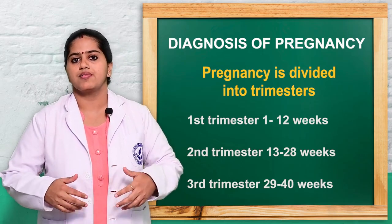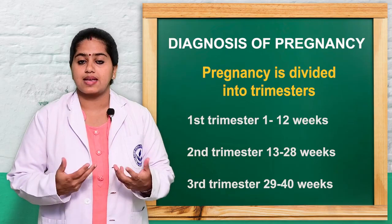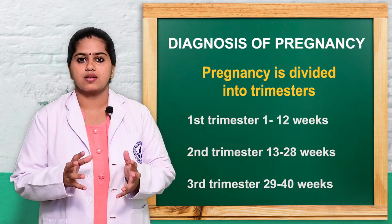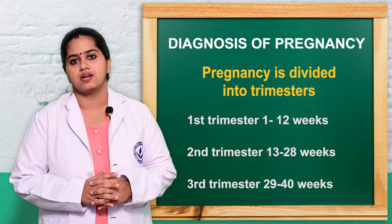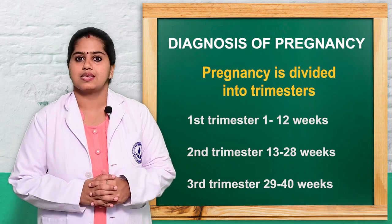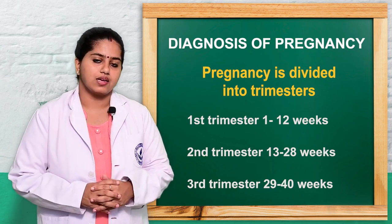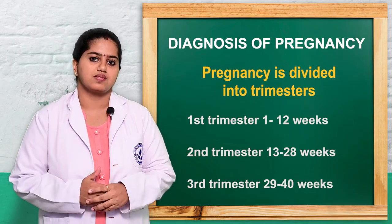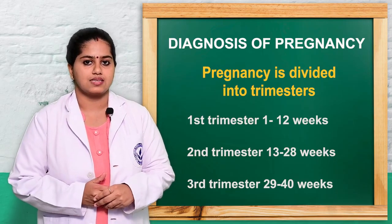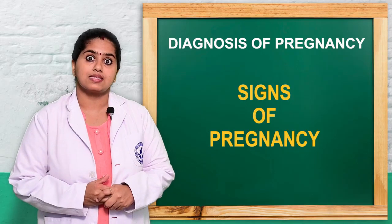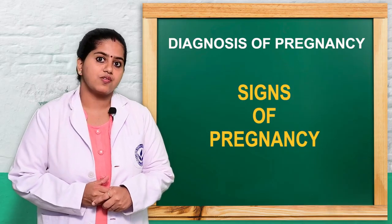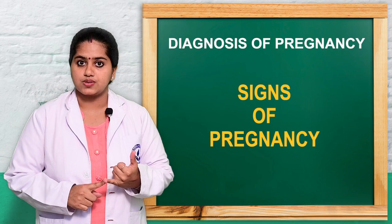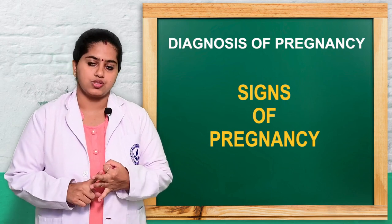As a result of these changes, women will experience different signs and symptoms. These signs and symptoms can be used to confirm pregnancy — this is known as the diagnosis of pregnancy. The signs of pregnancy can be generally classified as presumptive signs, probable signs, and positive signs.